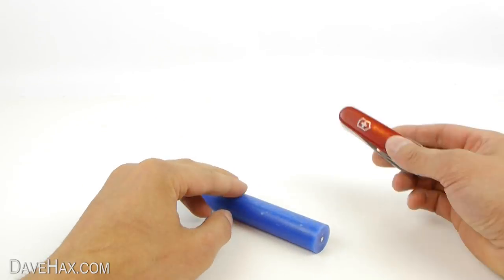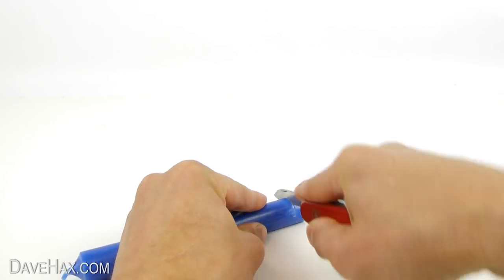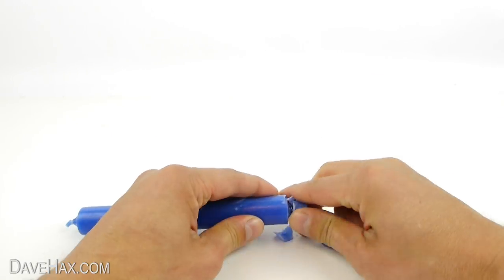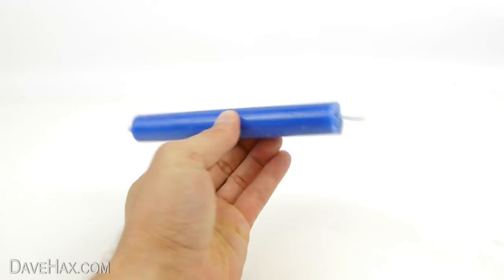Start by taking a candle, then using a sharp knife carefully remove some of the wax from the bottom of the candle to expose the wick. It should look like this.